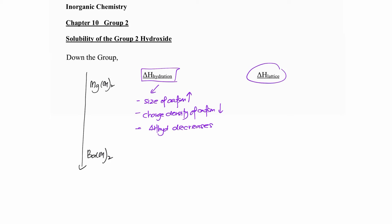For lattice energy, the same reasoning applies. The size of the cation increases down the group, so the charge density of the cation decreases. This means weaker ionic bonds are formed, and therefore lattice energy also decreases down the group.